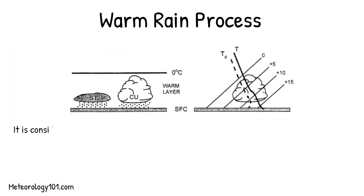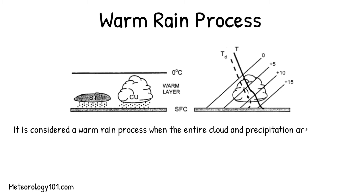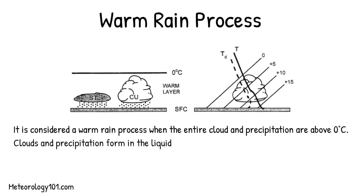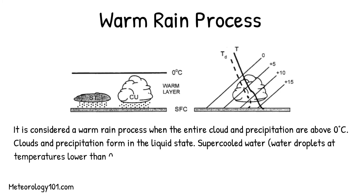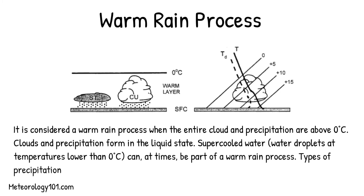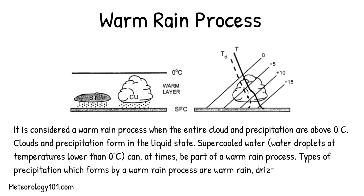It is considered a warm rain process when the entire cloud and precipitation are above 0 degrees Celsius. Clouds and precipitation form in the liquid state. Supercooled water can at times be part of a warm rain process. Types of precipitation which form by a warm rain process are warm rain, drizzle, and freezing drizzle.